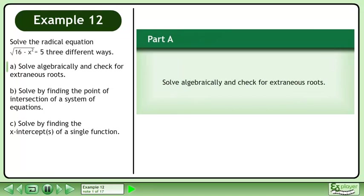Solve the radical equation √(16-x²) = 5 in three different ways. In Part A, solve algebraically and check for extraneous roots.